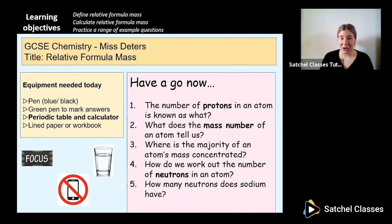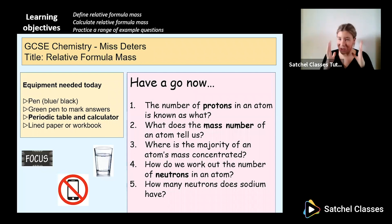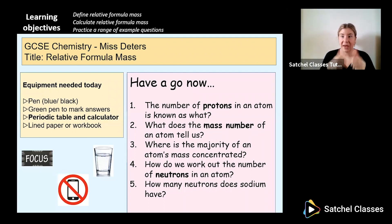We're going to go through the answers now, so make sure that you have had a go. The first question: the number of protons in an atom is known as what? Usually they ask you to define atomic number, but the number of protons in an atom is known as the atomic number — the number found on every element's box in the periodic table.